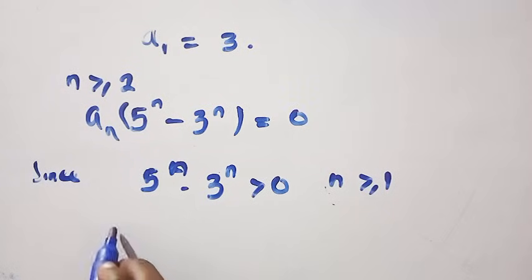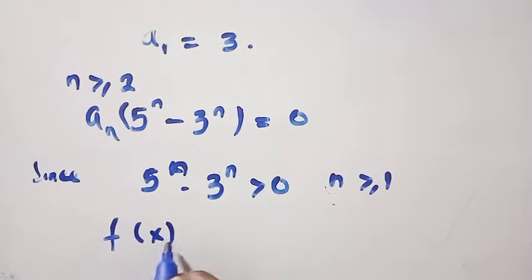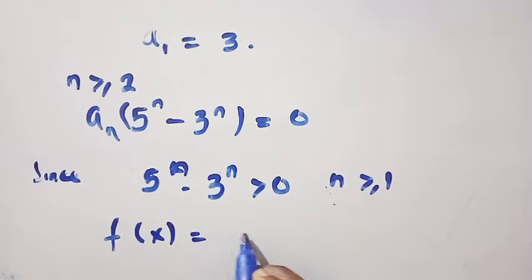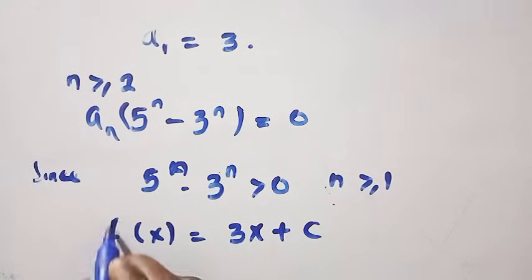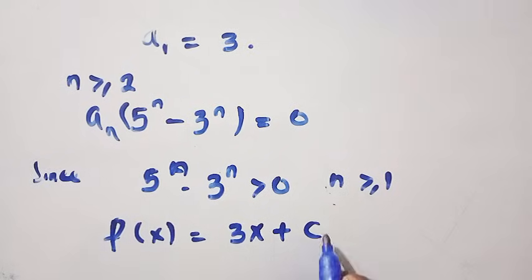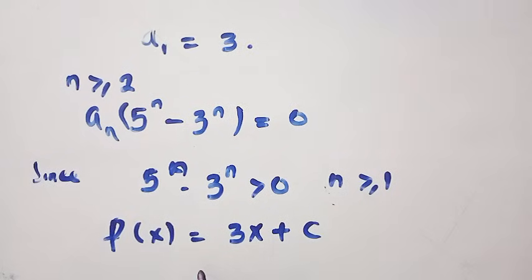Therefore, P(x) equals 3x plus c, where c is a constant term. Thanks for watching and see you in the next video. Never stop learning.